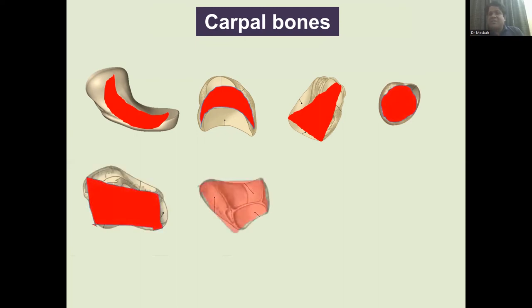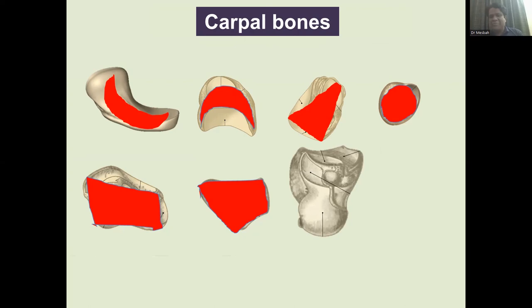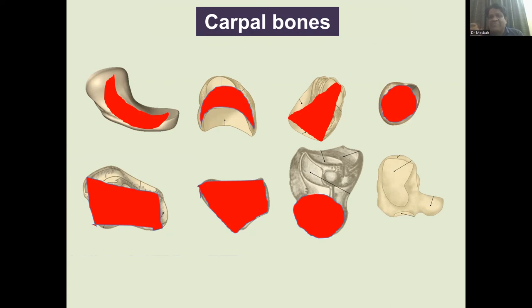The trapezium and trapezoid are trapezoid in shape — one bigger, one smaller. Capitate has 'capit-' meaning head, like 'capital' — the head of the state. Hamate comes from the Latin 'hamulus,' meaning hook. So whether a bone has a hook, a head, or a boat shape, its etymology tells you exactly what it looks like. My message is: while studying anatomy, make it more comprehensive, more simple, and more interesting. Thank you very much.